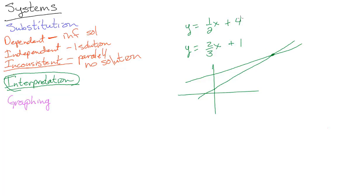If you solve these, go ahead and stick that guy in there. 1 half x plus 4 equals 2 thirds x plus 1. Subtract the 1 half and we get 1 sixth x. Subtract the 1 and we get 3, so we get x equals 18. Stick in 18 here and you get 9 plus 4 is 13. So 18, 13.